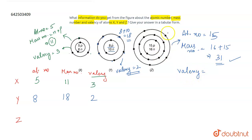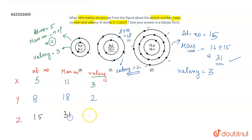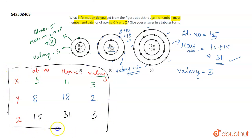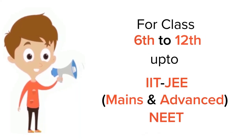For the valency of Z: it has five electrons in its valence shell and needs three more to complete its noble gas configuration, so the valency is three. To summarize: for Z, atomic number equals 15, mass number equals 31, and valency equals three. That's all the information for atoms X, Y, and Z.